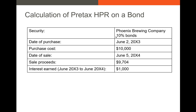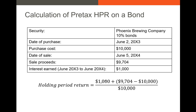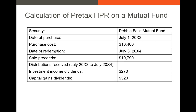Now let's look at the pre-tax holding period return on a bond. Phoenix Brewing Company 10% coupon bonds: date of purchase June 2nd, 20X3; purchase cost $10,000; sold for $9,700 on June 5th of the following year; interest earned was $1,000. So our HPR is $1,000 of interest plus the capital gain — ending value $9,700 minus starting value $10,000 — all divided by $10,000. Our holding period return is about 7.04%.